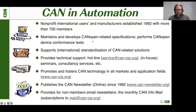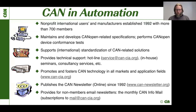CAN Automation, as you may know or not know, is a non-profit organization. It's the international users and manufacturers organization established in 1992 with more than 700 members worldwide. So we are having a 30-year anniversary this year and we will celebrate it with our members. We maintain and develop many different CAN-related specifications and CANopen-related specifications. We are also performing the CANopen conformance tests.